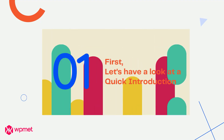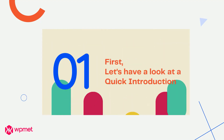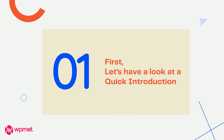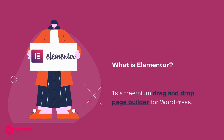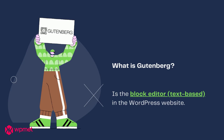But first, let's have a look at a quick introduction. Elementor is a freemium drag-and-drop page builder for WordPress. On the other hand, Gutenberg is a text-based blog editor in WordPress.